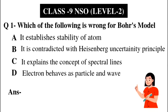So here we have to identify what is wrong about Bohr's model. In Bohr's model, we consider the electron only as a particle, not as a wave. The concept of electron behaving as both particle and wave is from a different principle. So option number D will be the right answer.